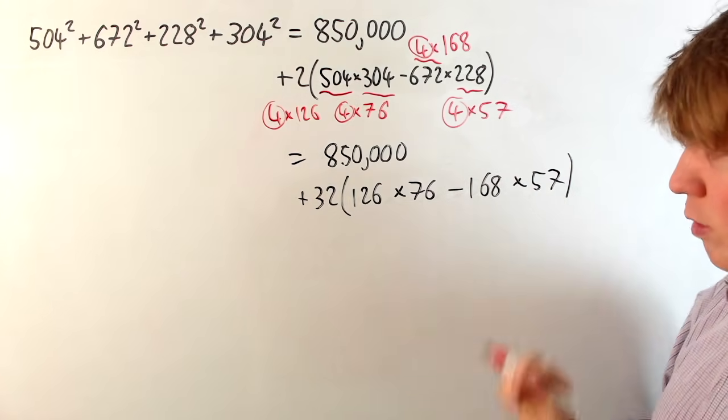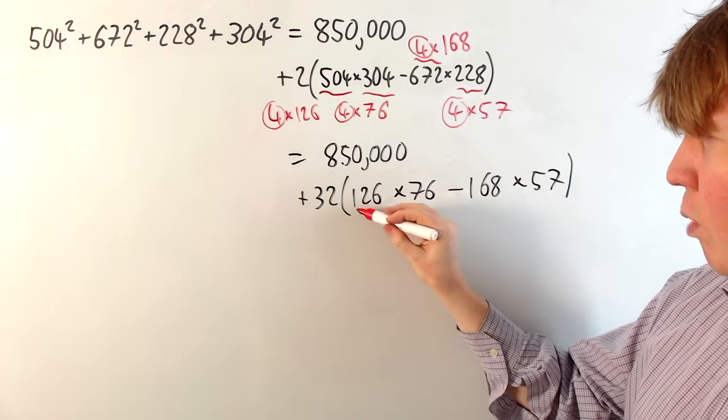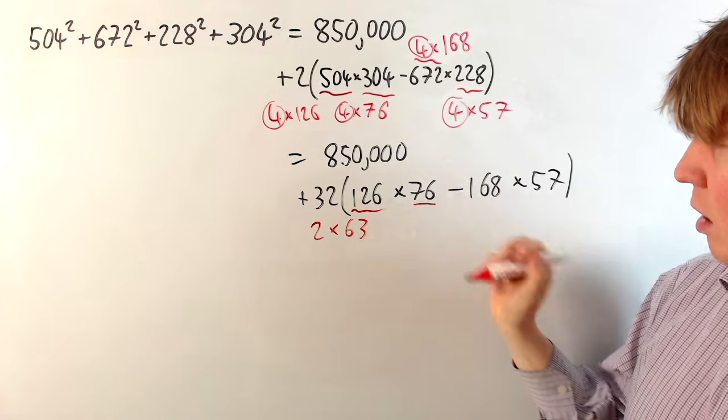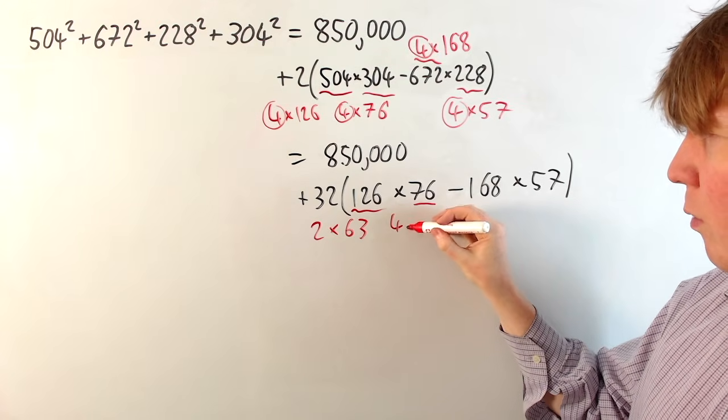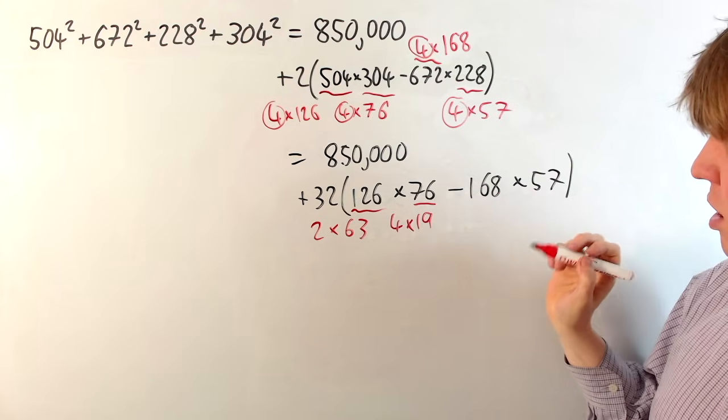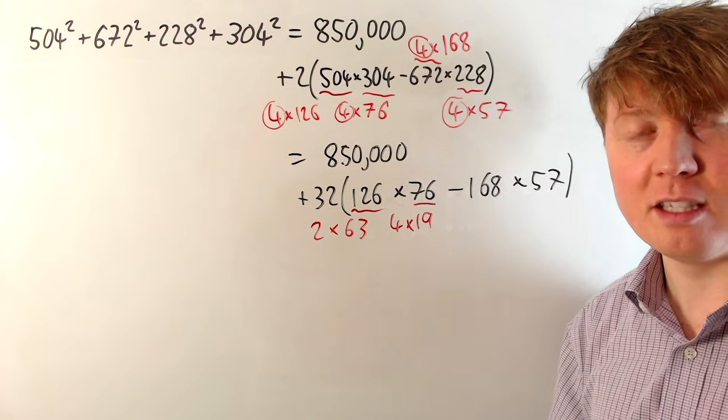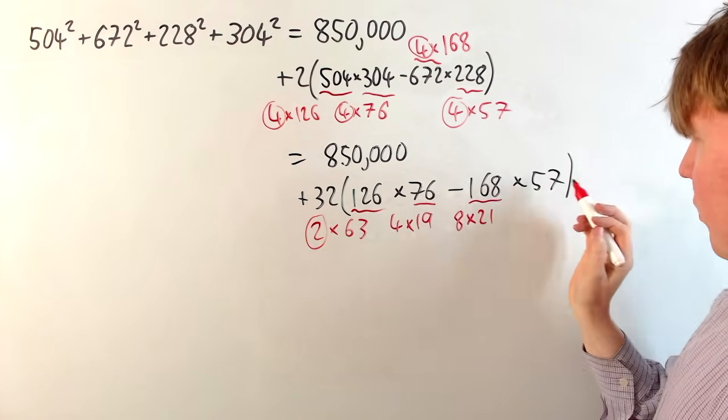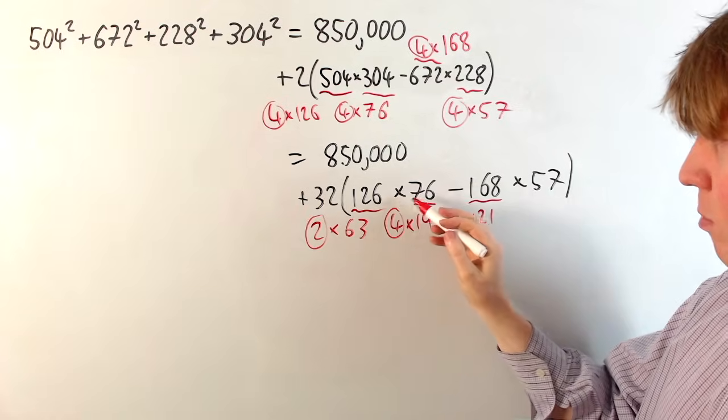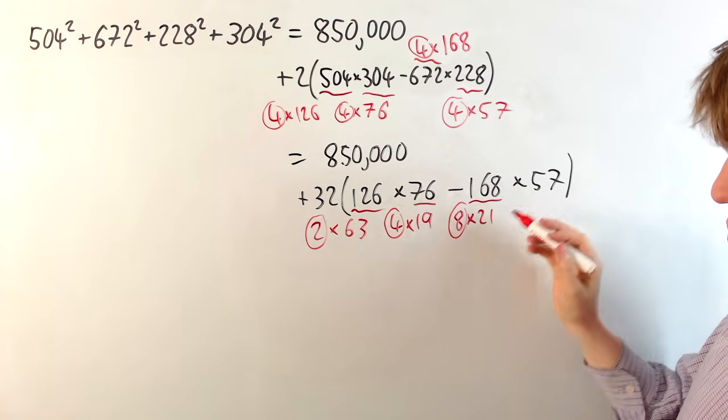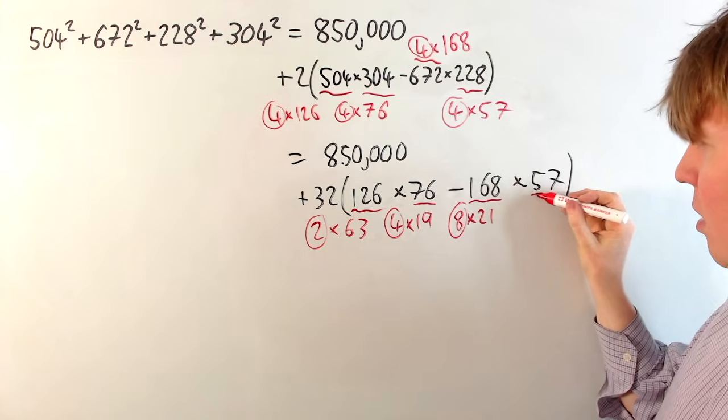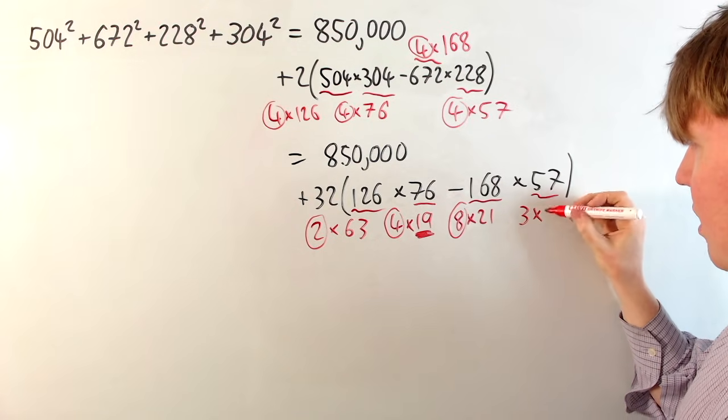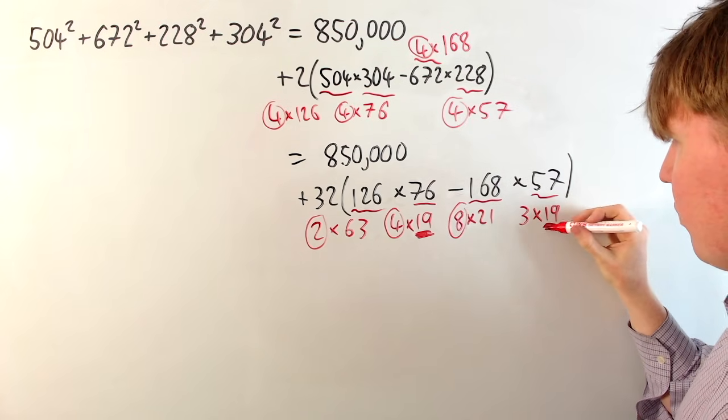And again, we can see there's still some factors of 2 that we could take out here. So 126, this is 2 times 63. And 76 is actually a multiple of 4. So we can write this as 4 times 19. And here, the 168 is a multiple of 8. This is 8 times 21. You can see, even though the 57 isn't even, we've got 2 times 4 in this pair. And we've got an 8 here. So we could still take out a factor of 8. But actually, even better than that, you see we've got the 19 here in 76. Well, 57 is 3 times 19. So we can even take out this factor of 19.